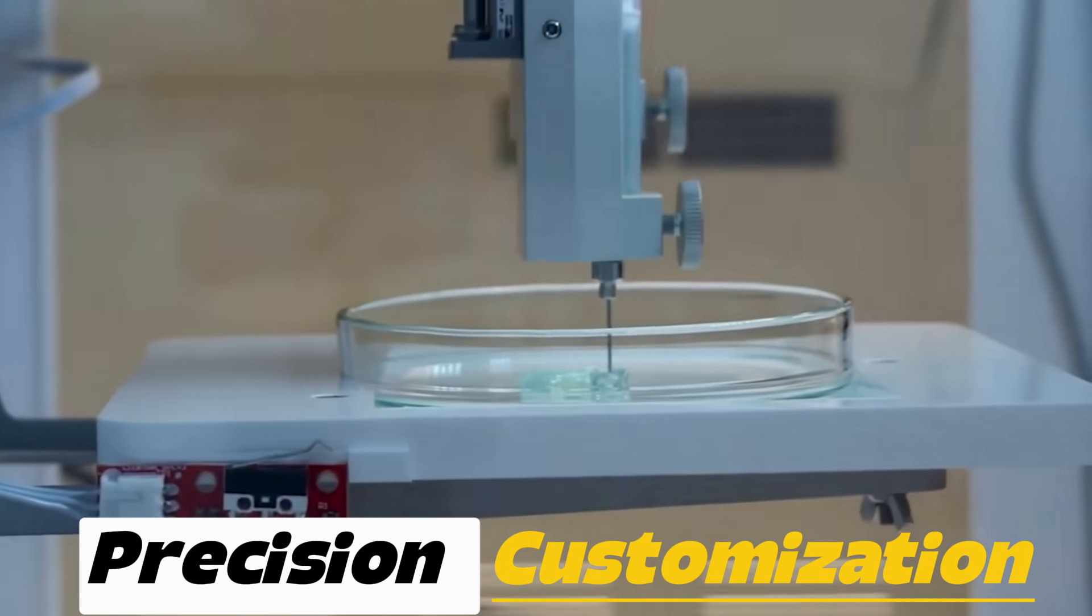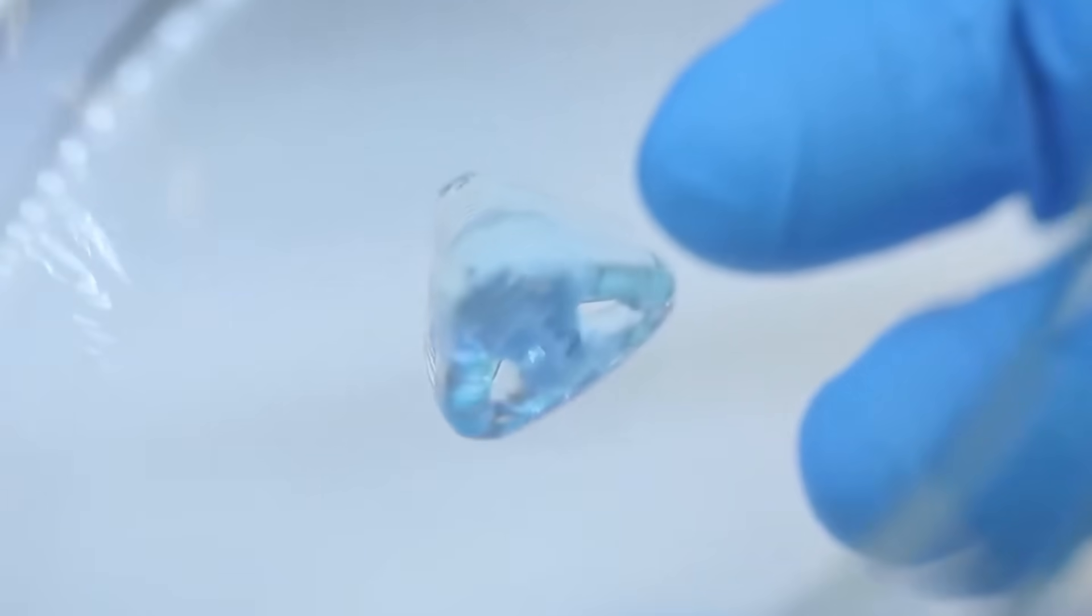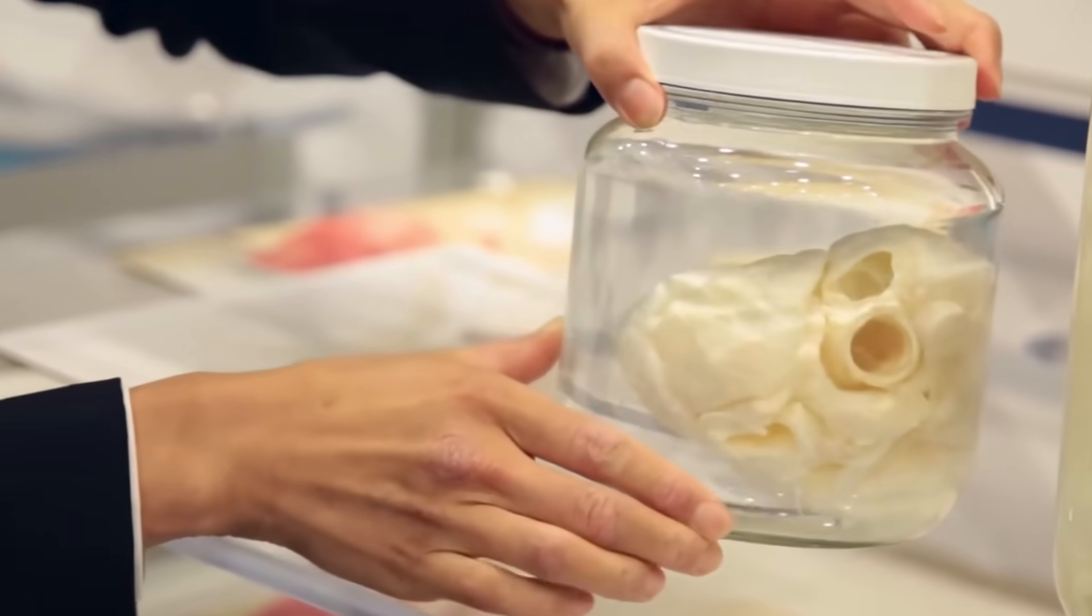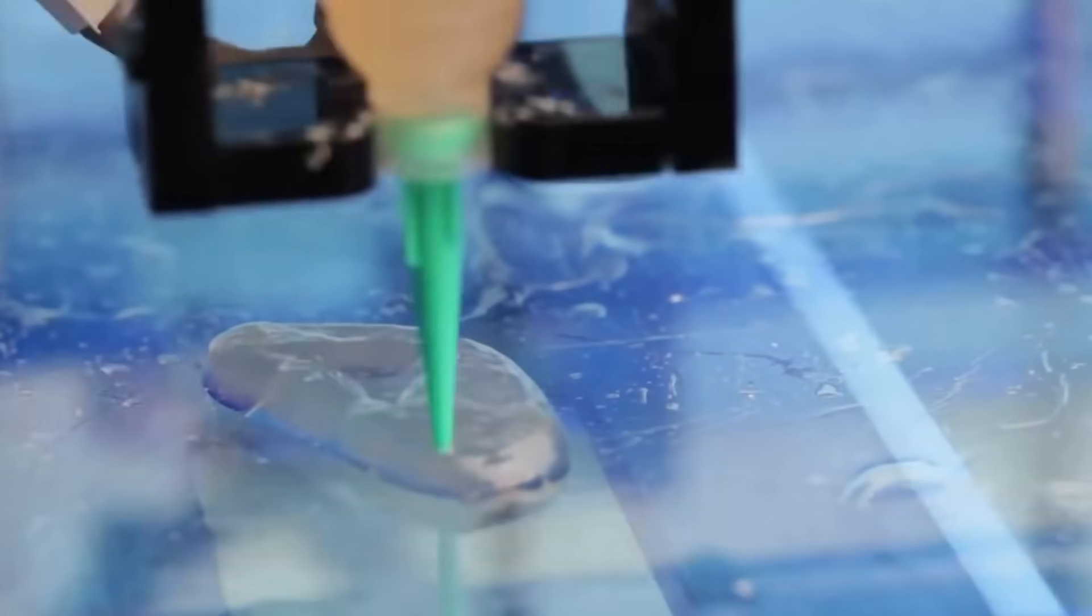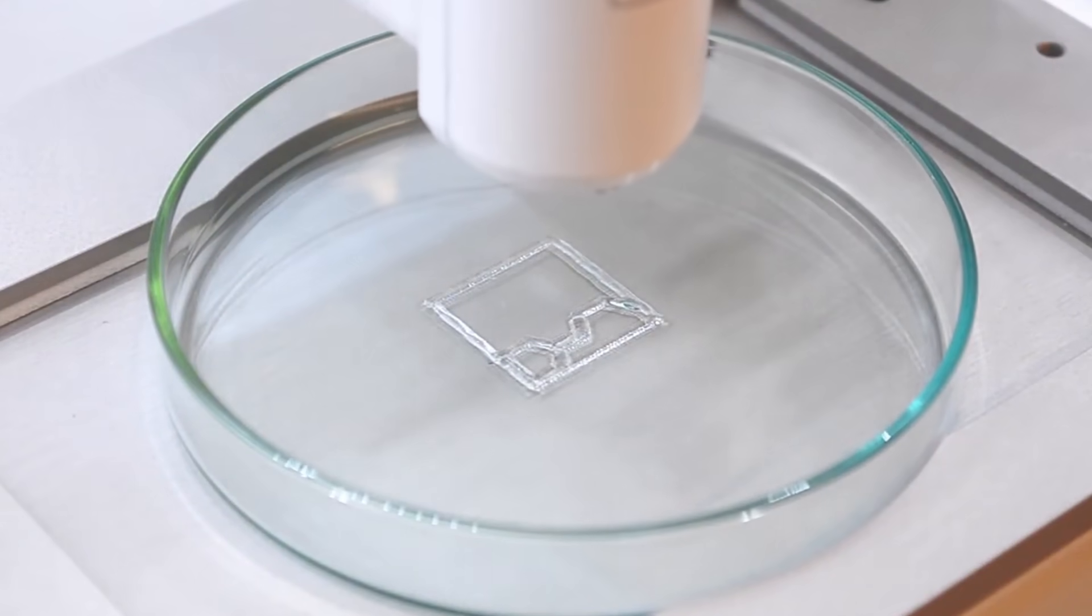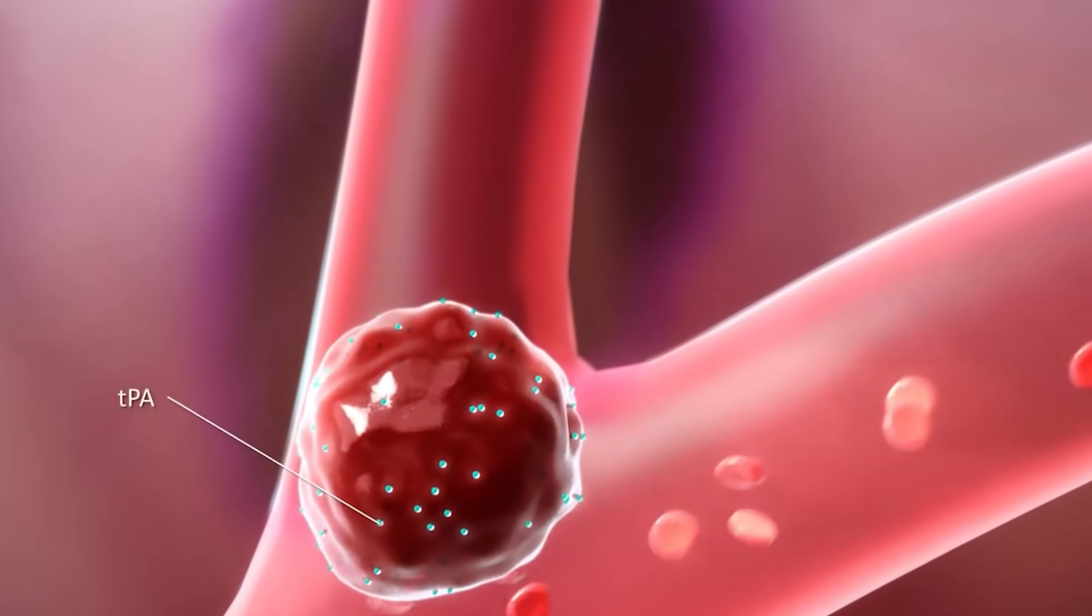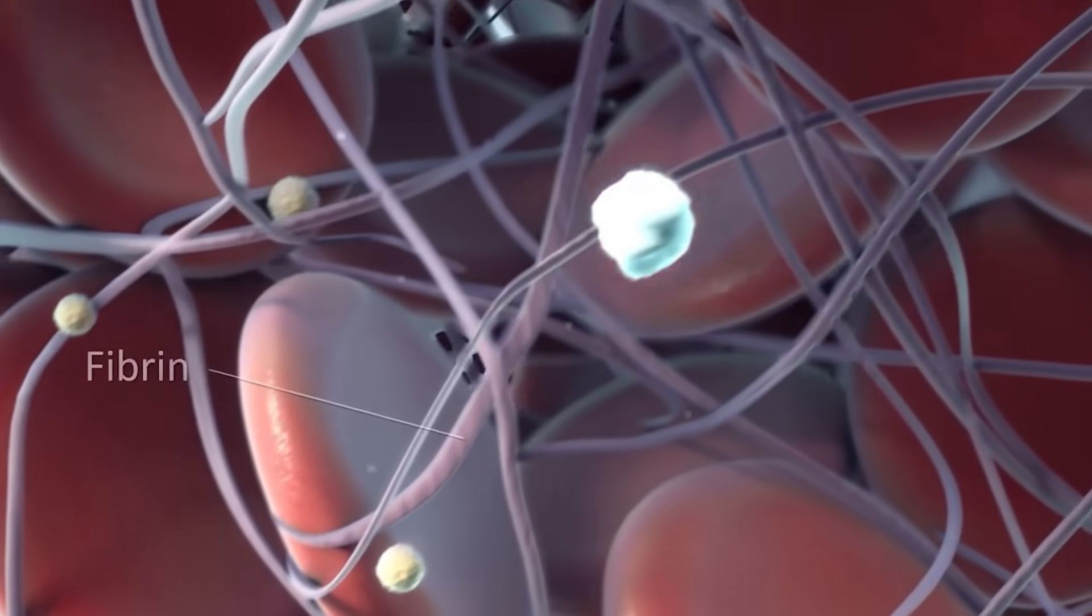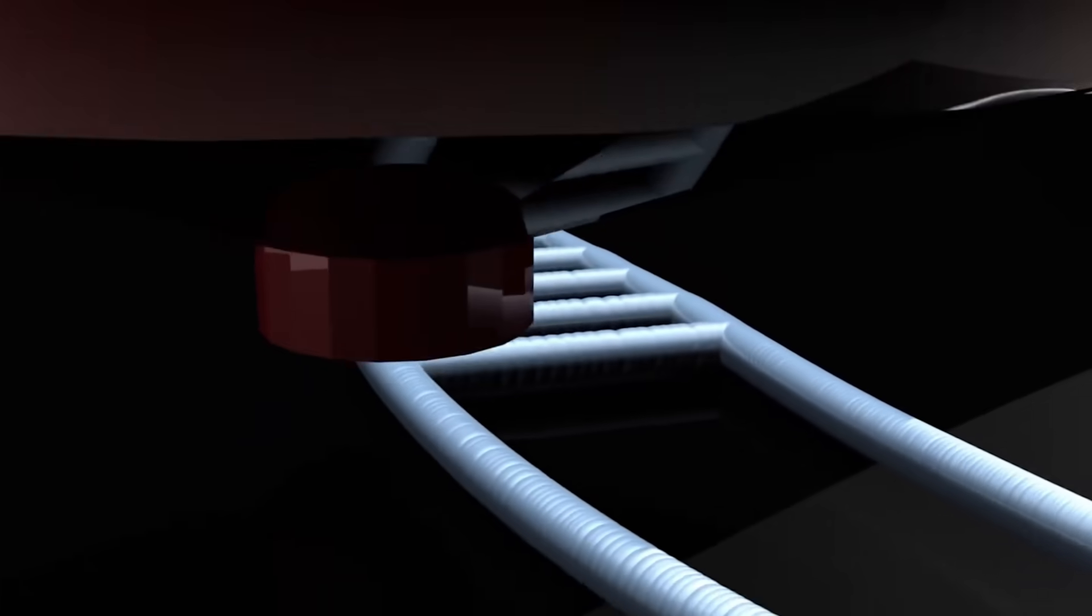Number 3. Precision and Customization is a defining feature of 3D bioprinting that allows scientists and medical professionals to create tissues and organs tailored to the specific anatomy and biology of individual patients. Using imaging technologies like MRI, CT scans, or 3D ultrasounds, highly accurate digital models of a patient's organ can be created. These models guide the bioprinter to deposit cells and biomaterials in precise layers, ensuring that the resulting tissue replicates the shape, size, and internal structures of the natural organ.